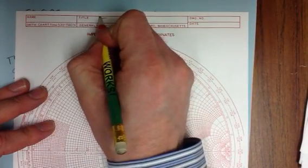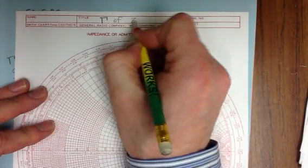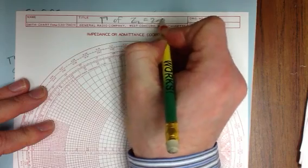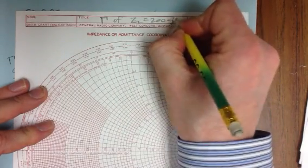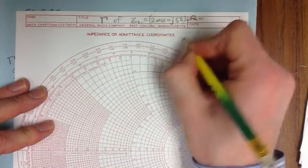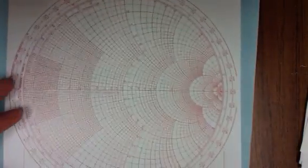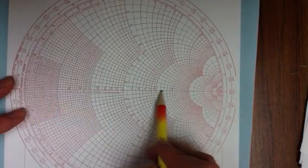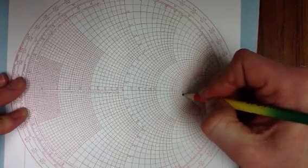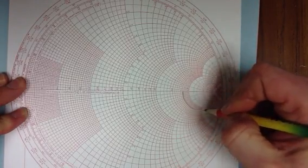So, reflection coefficient of load impedance equals 200 minus J50 ohms, characteristic impedance is 50 ohms. So, 4 minus J1, 4 is here, minus J1.